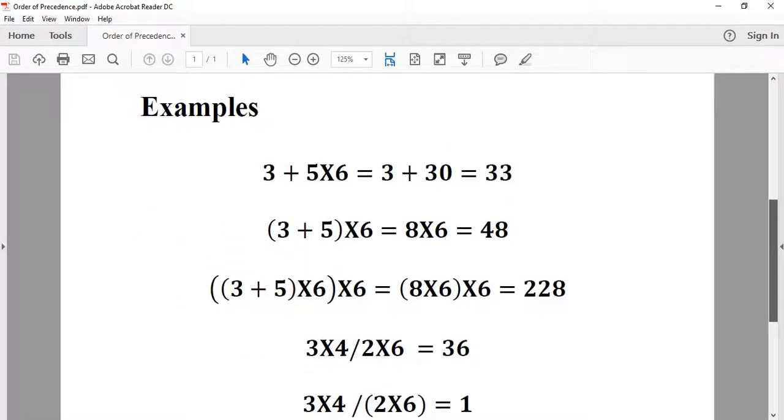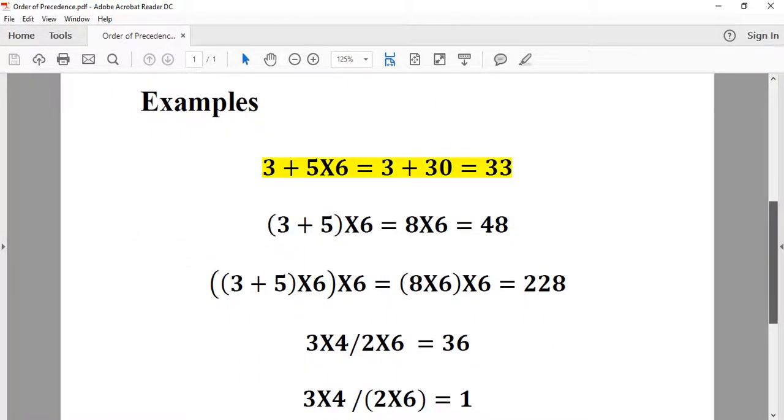Let's see some examples. 3 plus 5 times 6. The multiplication has priority over the addition, so we first multiply 5 times 6, which is 30, and add 3 to 30. The answer is 33.